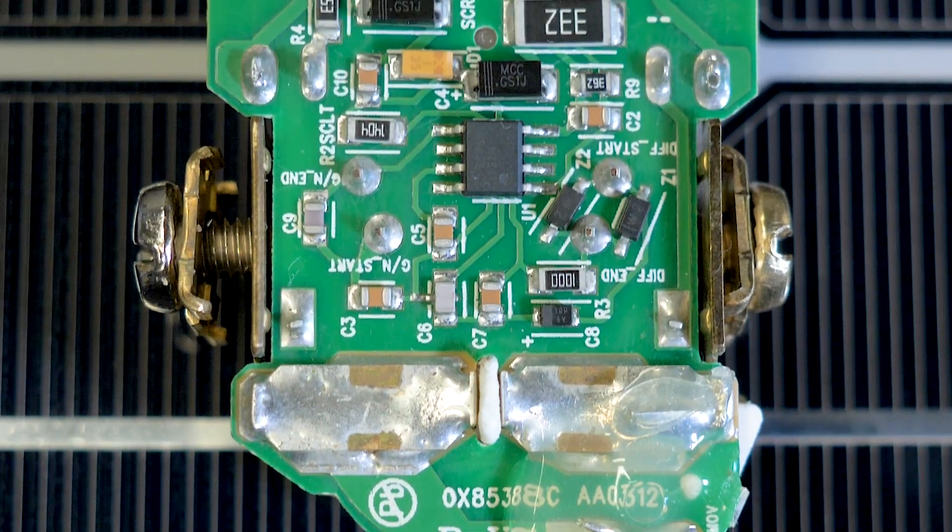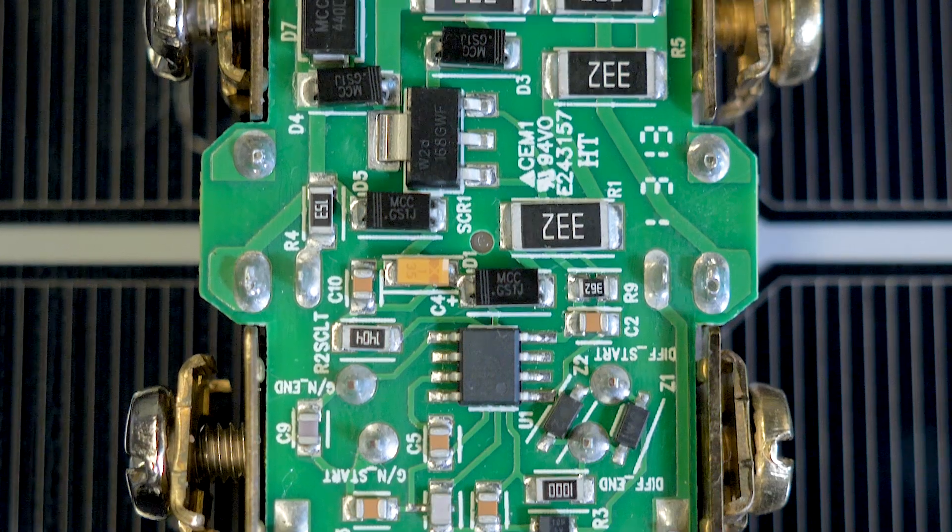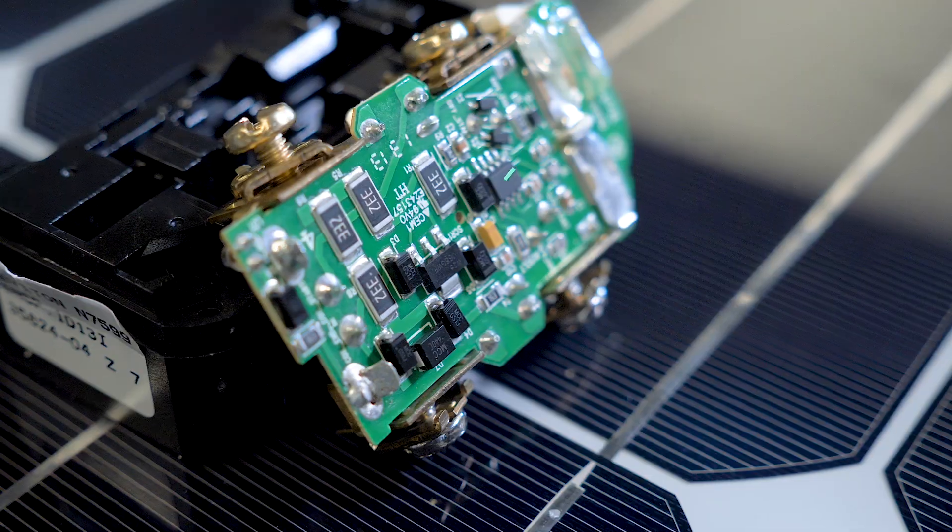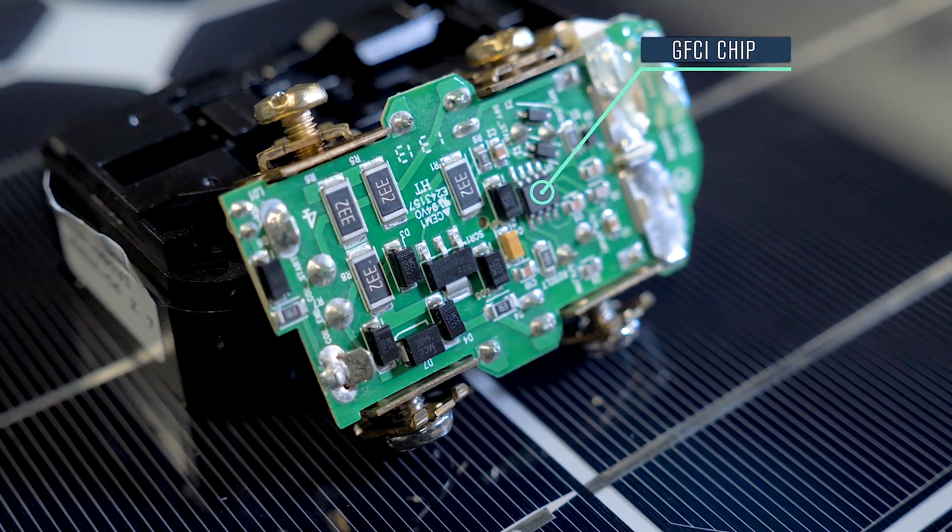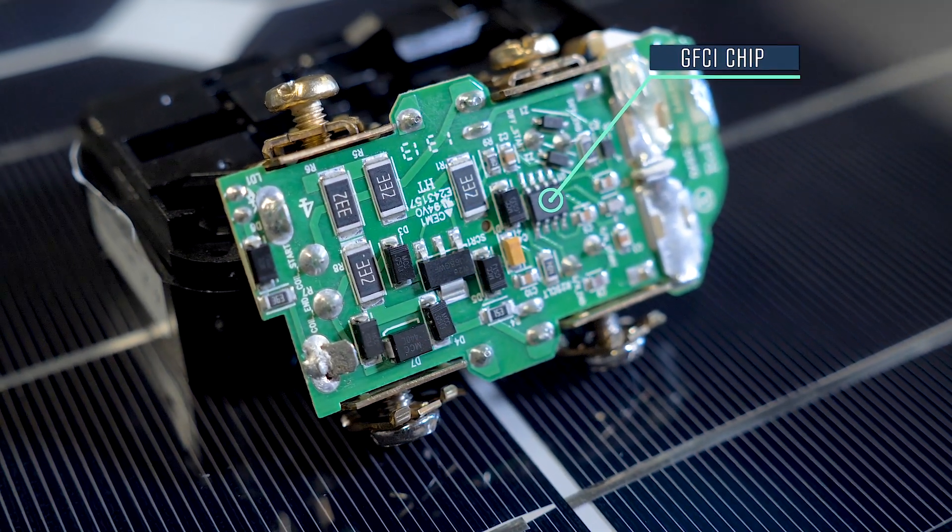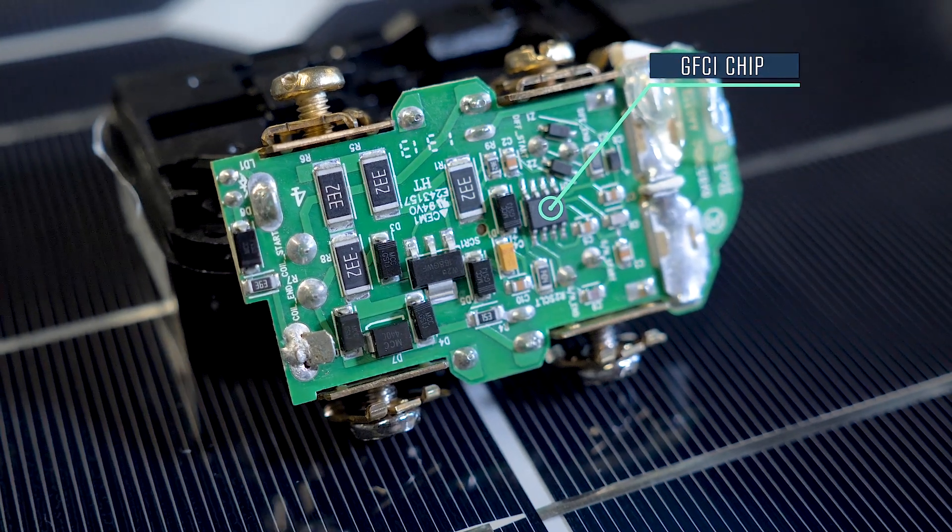The PCB is single-sided with one main chip and numerous discrete components. The chip on the Leviton GFCI is a ground fault interrupter control device from Fairchild Semiconductor recently acquired by ON Semiconductor.